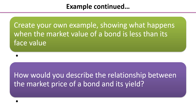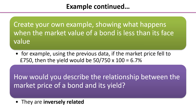Now we want you to create your own example showing what happens when the market value of a bond is less than its face value — try and work out the yield. Then describe the relationship between the market price of a bond and its yield. Using the previous data, if the market price fell to £750, then the yield would be £50 over £750 times 100, giving you 6.7%. So here the yield has risen when the market price falls. How would you describe the relationship? They are inversely related — as one goes up the other goes down.